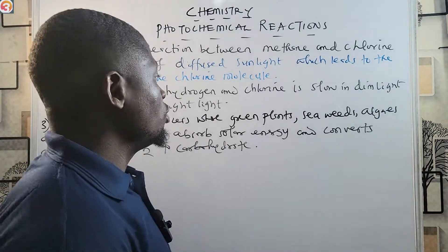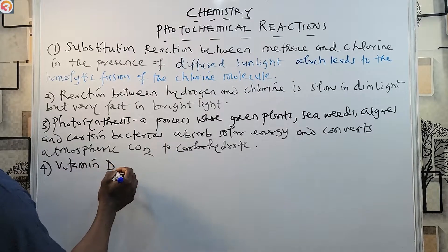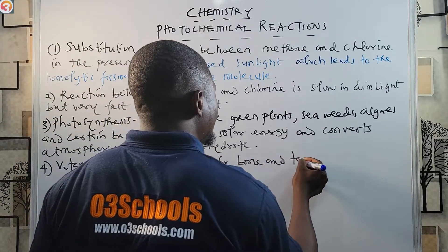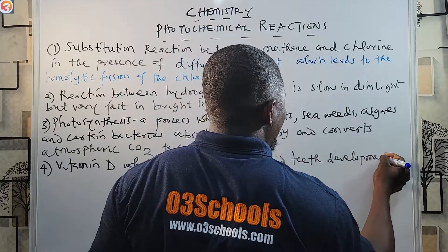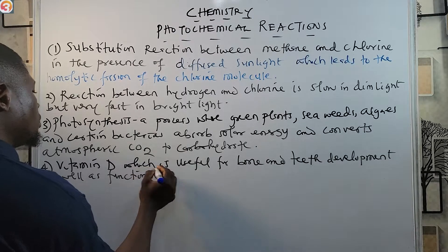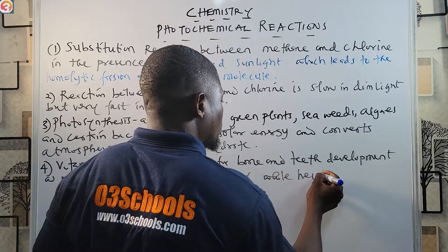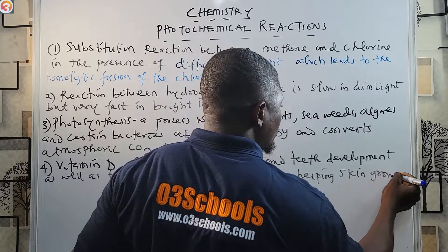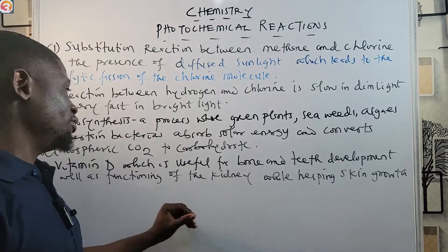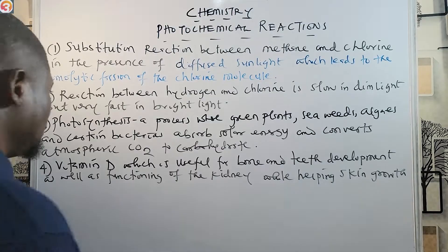Photosynthesis — the process where green plants, seaweeds, algae, and certain bacteria absorb solar energy and convert atmospheric CO₂ to carbohydrates — is also a photochemical process. Even vitamin D, which is useful and helpful for bone and teeth development, as well as functioning of the kidney and helping skin growth, is also a photochemical process.